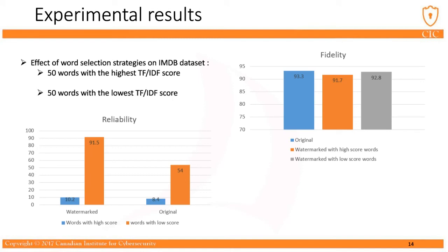For analyzing the effect of the word selection strategy, we show the fidelity and reliability scores for both strategies. As you can see in the fidelity chart, both strategies have a negligible effect on model accuracy. In the reliability chart, when we exchange words with a low TF-IDF score, it yields minimal false negatives in watermark extraction. But when we exchange words with a high TF-IDF score, the watermark extraction accuracy is very low, because the latent features extracted from the DNN are correlated with these types of words. So words with a high TF-IDF score have a dominant role in extracting features.